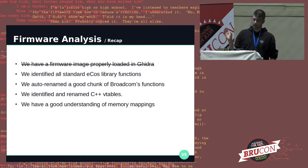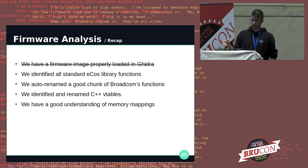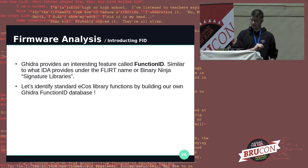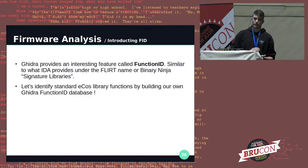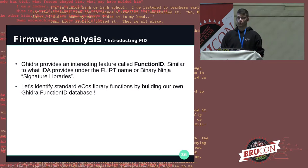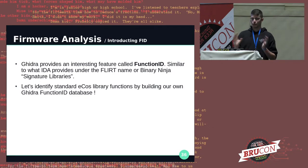The plan is to identify standard library functions, rename a good portion of the functions, identify C++ vtables, and get a good understanding of memory mappings. The first step is to identify ECOS standard library functions using a signature library — you can call it FLIRT, function ID, or signatures if you're a fan of Radare2. It's all the same: function pattern matching.